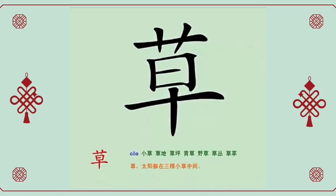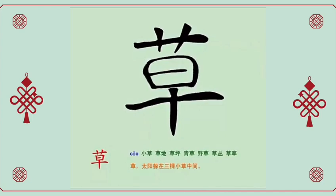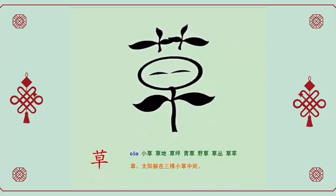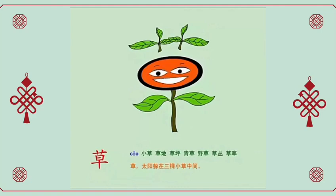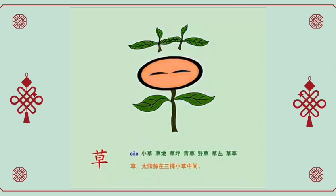草, grass. The sun hides among the three grasses. 草地, grassland. 青草, green grass. 草率, careless.